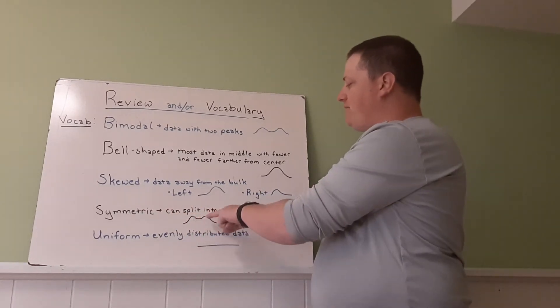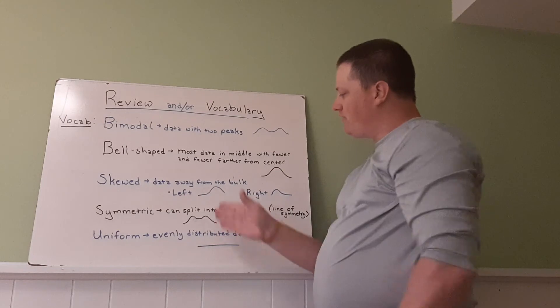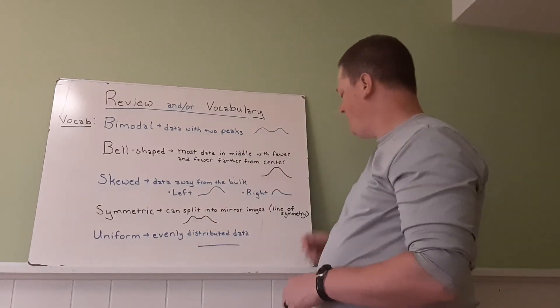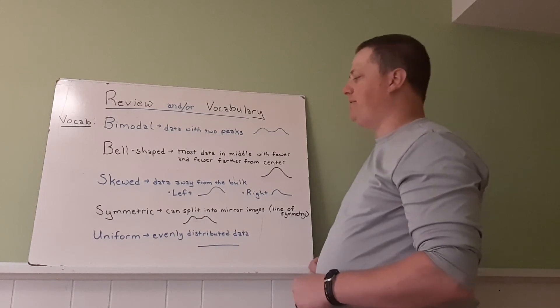Symmetric data is data that can be split into mirror images. So if you draw a line right down the middle, you'll see the same thing on both sides. We use a line of symmetry to help us understand that one.